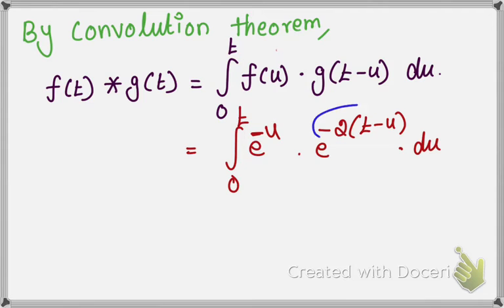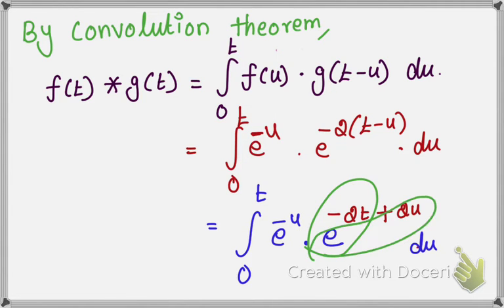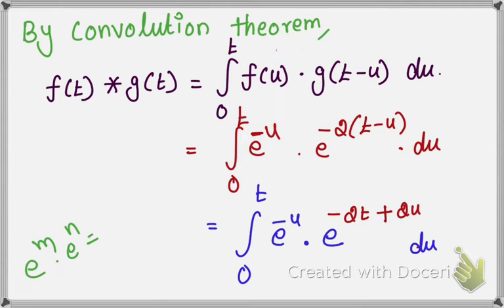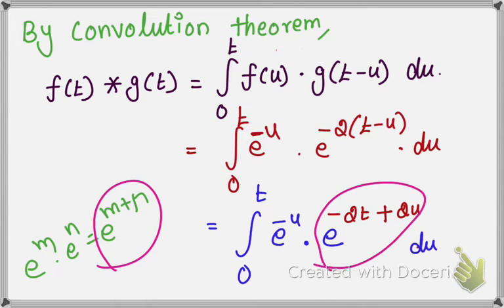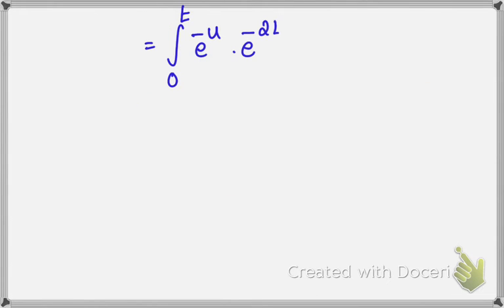Next, multiply the terms inside: you get integral 0 to t of e power minus u times e power minus 2t plus 2u du. We split them into two separate terms — the first term is e power minus 2t and the second is e power 2u — because e^m times e^n equals e^(m+n). This is of the form of addition, so you split them into two separate terms. In the next step, write this as integral 0 to t of e power minus u times e power minus 2t times e power 2u du.